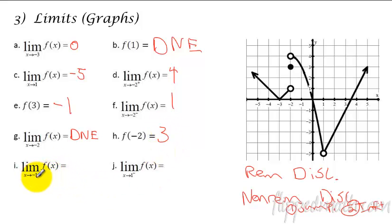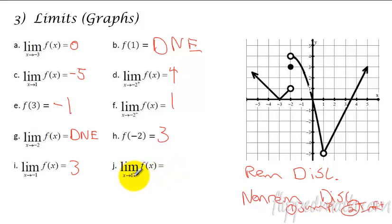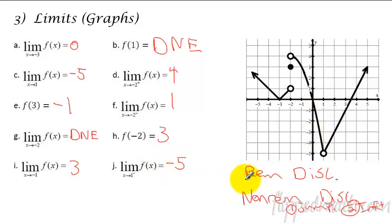Here we're approaching negative 2 from both sides. Since the left side and the right side are different, it does not exist. What is the y value of negative 2? It's the filled-in circle, so the y value of negative 2 is 3. Now we'll approach negative 1 from both sides — the left side and right side approach the value of 3. And the last one: we're going to approach x equals 1 from the left. Approaching 1 from the left, and it is approaching negative 5.